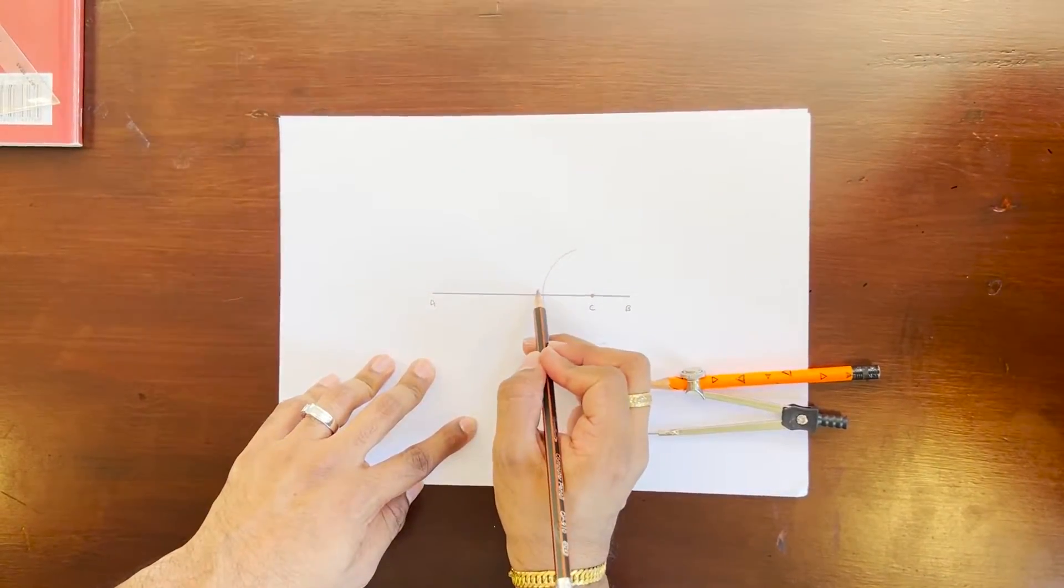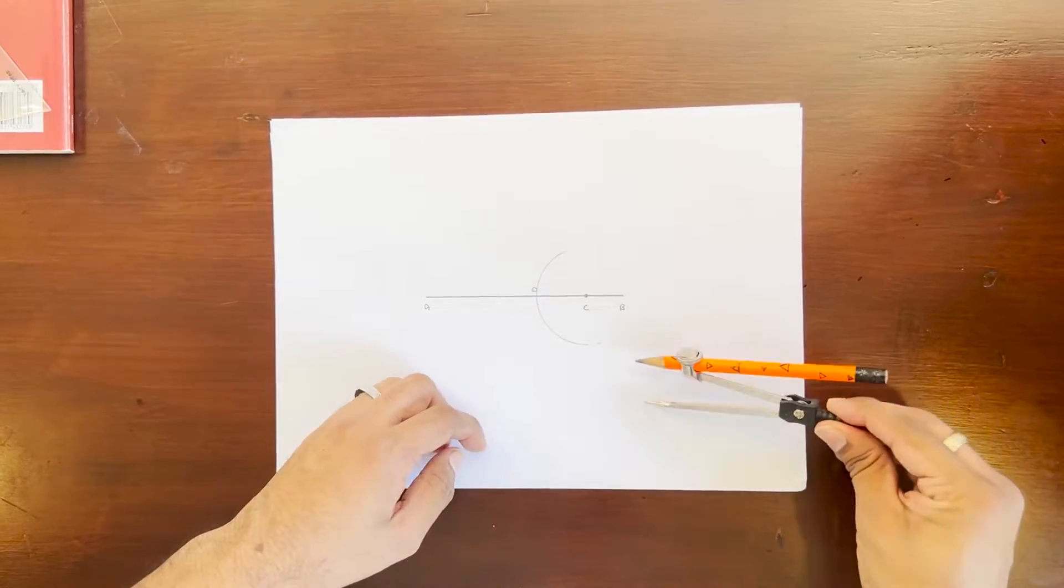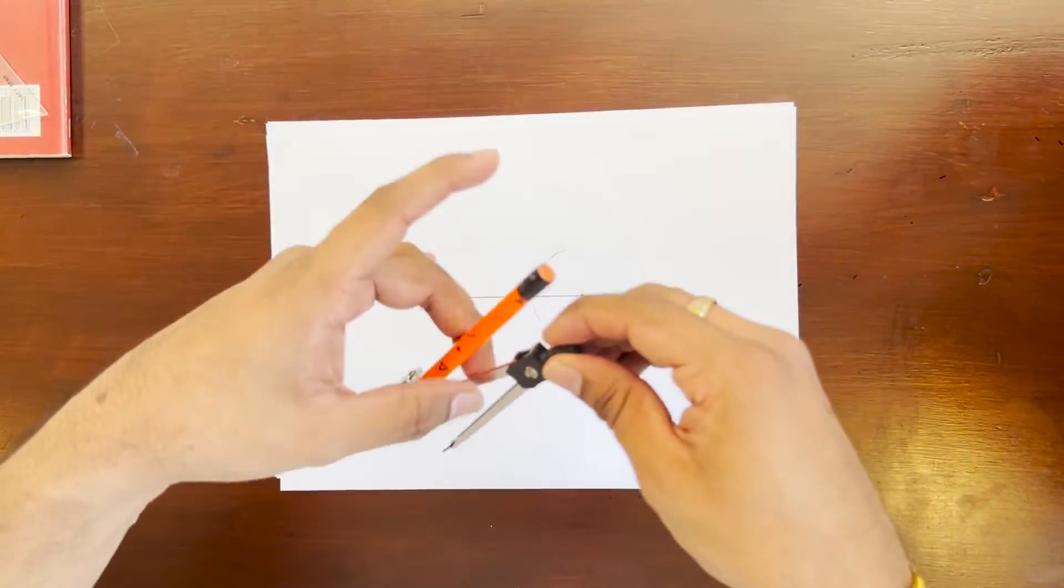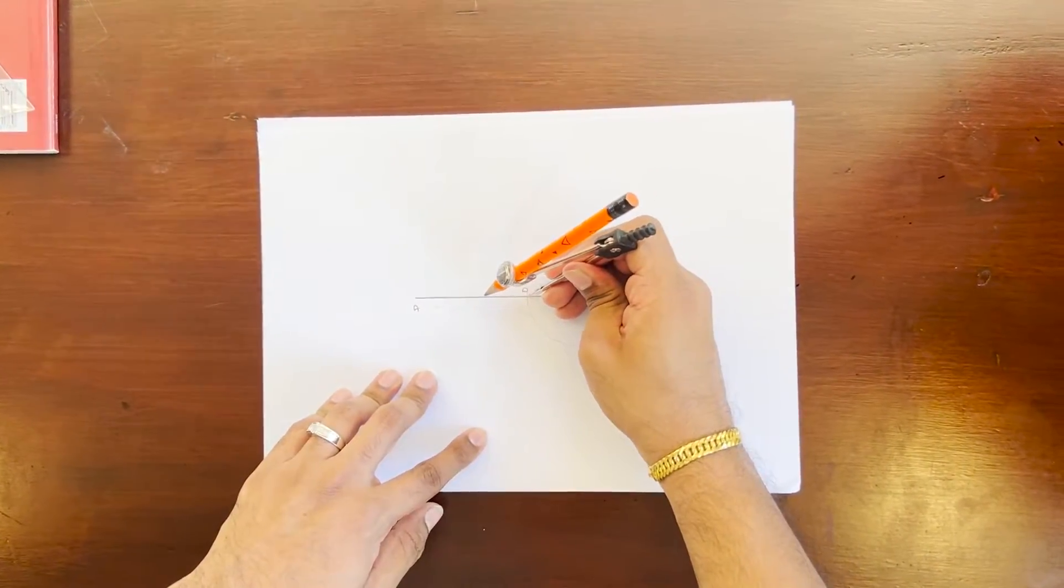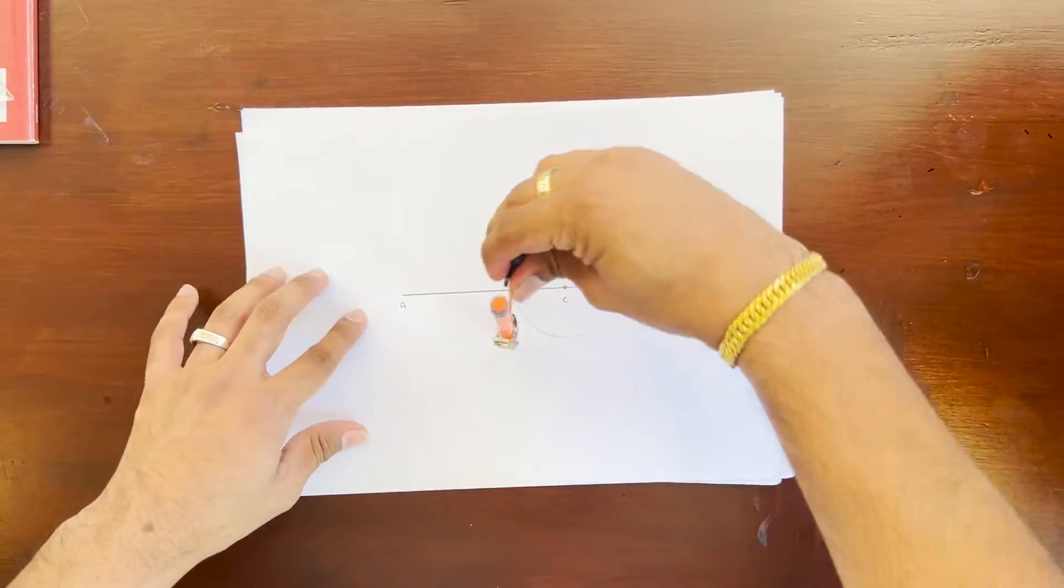Let me call this point D. Now make sure this radius does not change. Keeping it at point D, I'm going to draw one more arc right here.